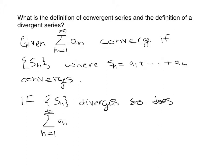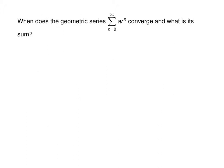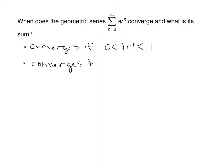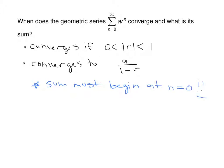So far that's kind of your only tool. We also talked about a few specific kinds of series: when does the geometric series converge and what is its sum? The geometric series converges if the absolute value of r is between 0 and 1, and it converges to a over 1 minus r. Be aware that for that to be true, your sum must begin at n equals 0; if it doesn't, you have to change it.